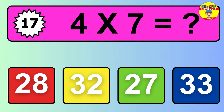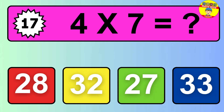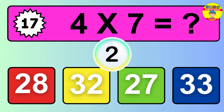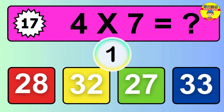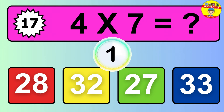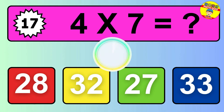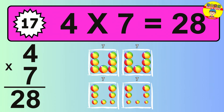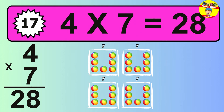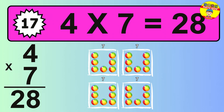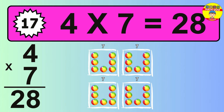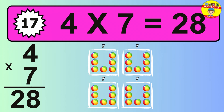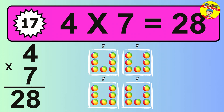Question 17. Four times seven equals what? The answer is 4 times 7 is 28. To calculate, we have 4 groups with 7 balls each one. So, how many balls do we have?